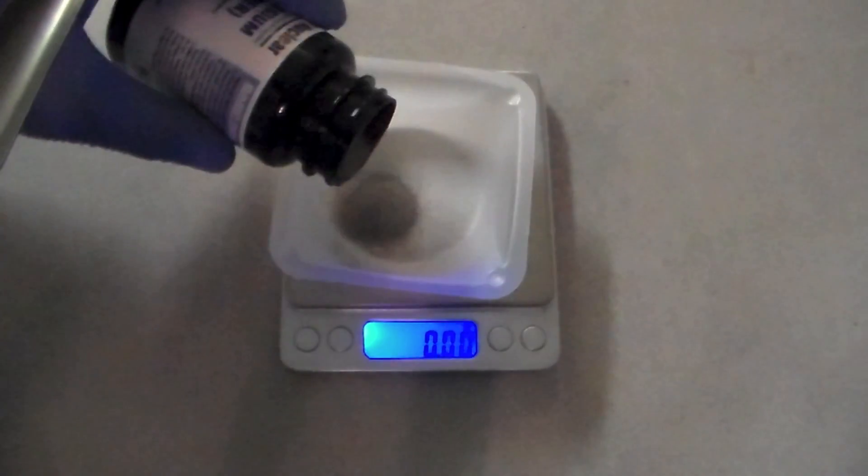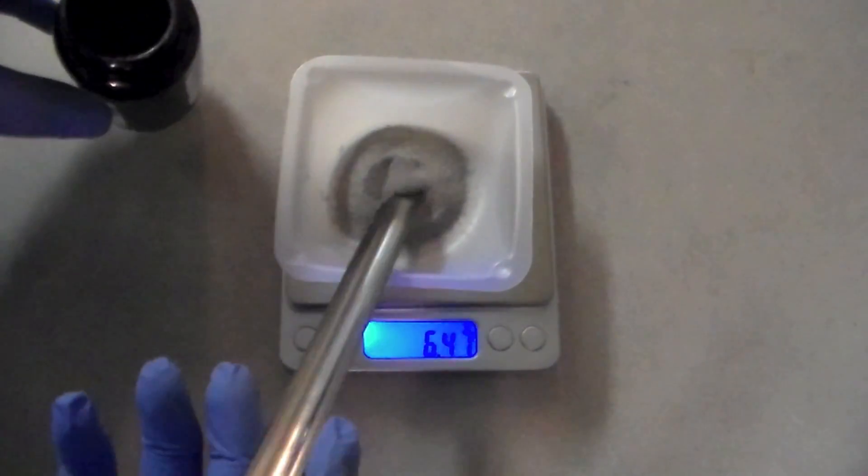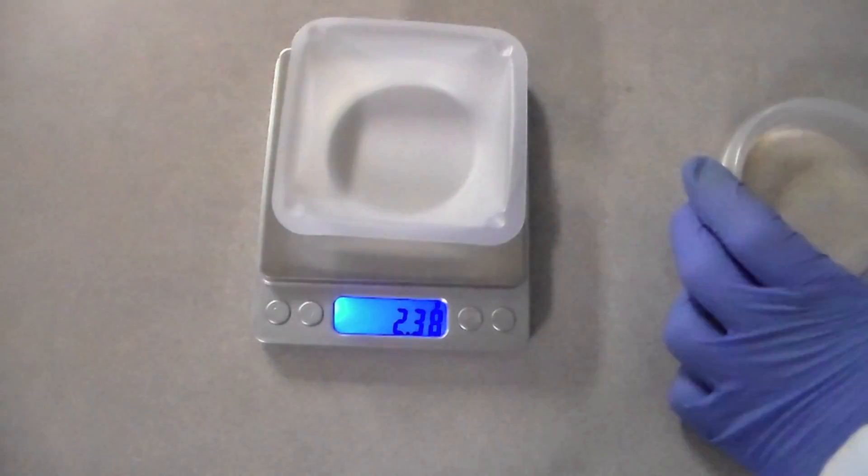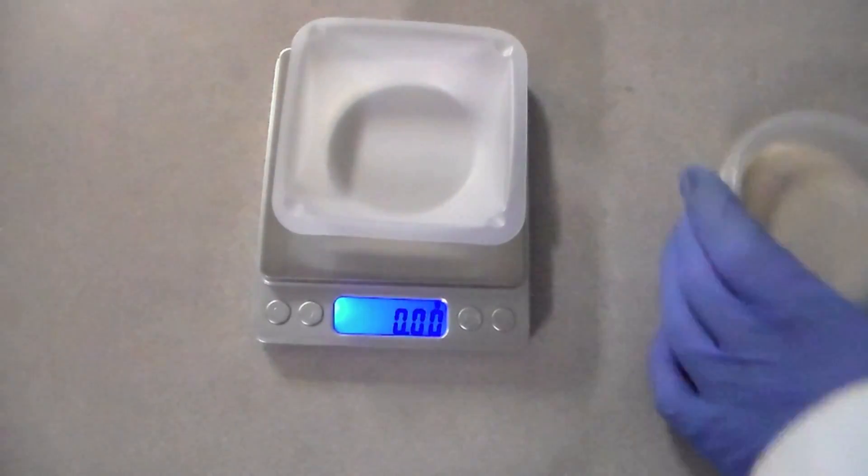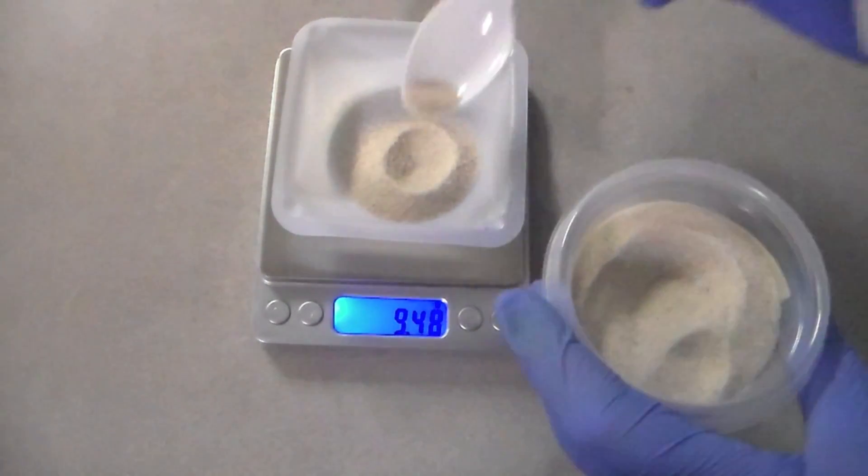When I weighed out the chemicals, you can see that I used a little too much magnesium, but I just redid the stoichiometry and found that I would need 9.53 grams of silicon dioxide to maintain the 20% excess.